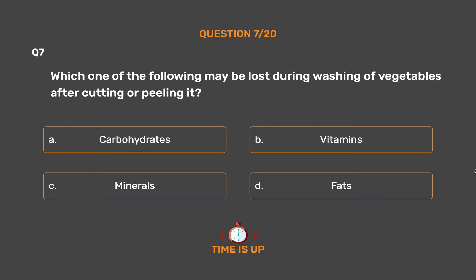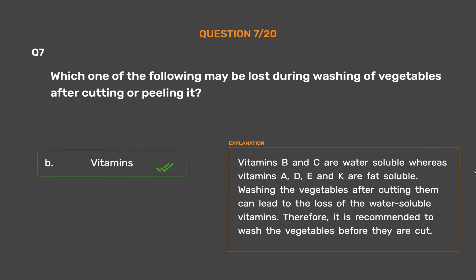The correct answer is Option B - Vitamins. Vitamins B and C are water-soluble, whereas vitamins A, D, E, and K are fat-soluble. Washing the vegetables after cutting them can lead to the loss of water-soluble vitamins. Therefore, it is recommended to wash the vegetables before they are cut.